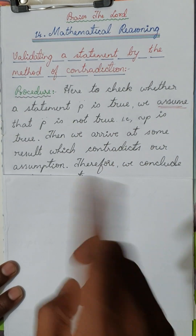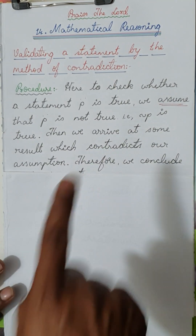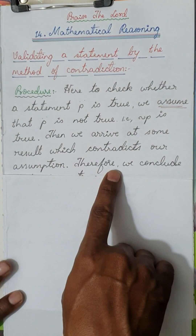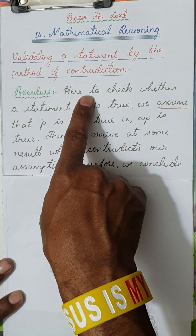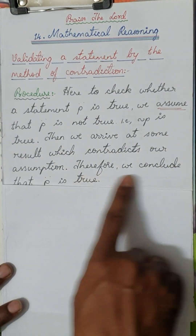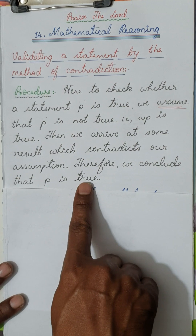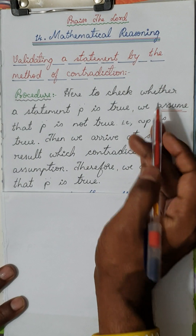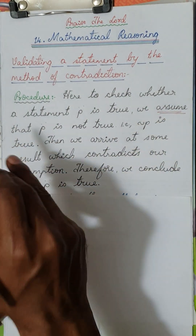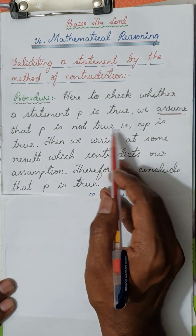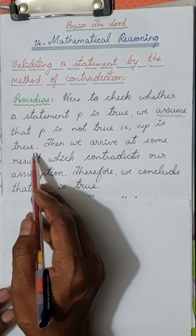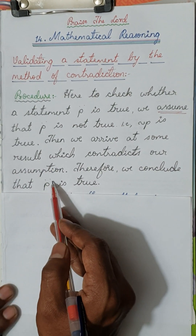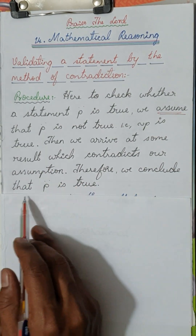Then we arrive at some result which contradicts our assumption. So this is how we consider the procedure. To check whether the statement P is true, we assume that P is not true, that is, we assume negation P is true. Then we arrive at some result which contradicts our assumption.